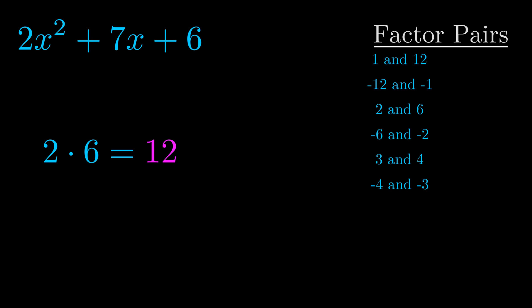The b value is the coefficient on the x term. That's the middle term, the one that we haven't done anything with yet. And really this is the only factor pair that we need.